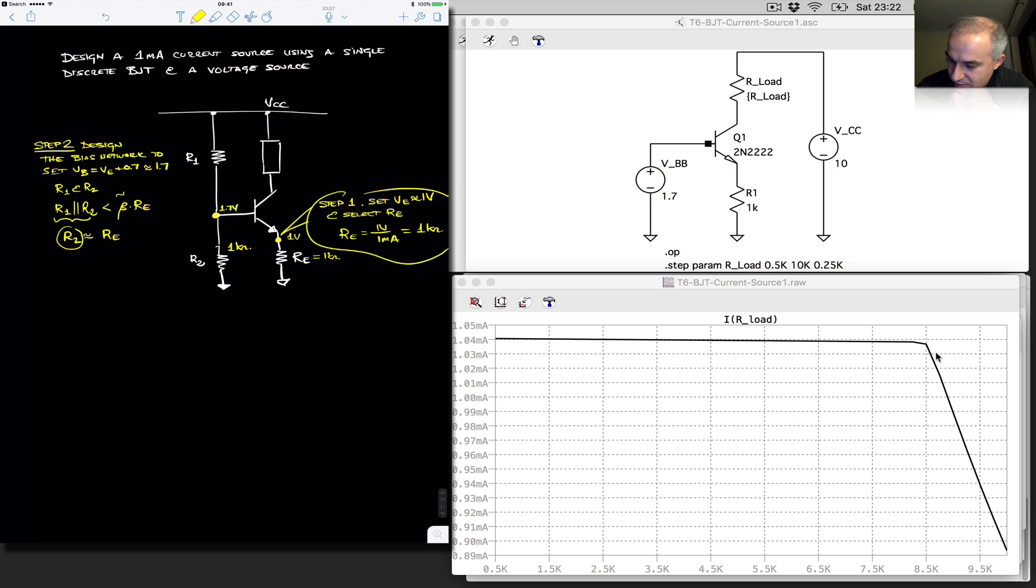And beta, although I'm trying to do the design that is independent of beta, I'm going to assume it's around 100. And so in that case, R2 is 100 times, beta times RE, if I set it equal to RE. So this should be sufficiently stiff. And so now this is a voltage divider.